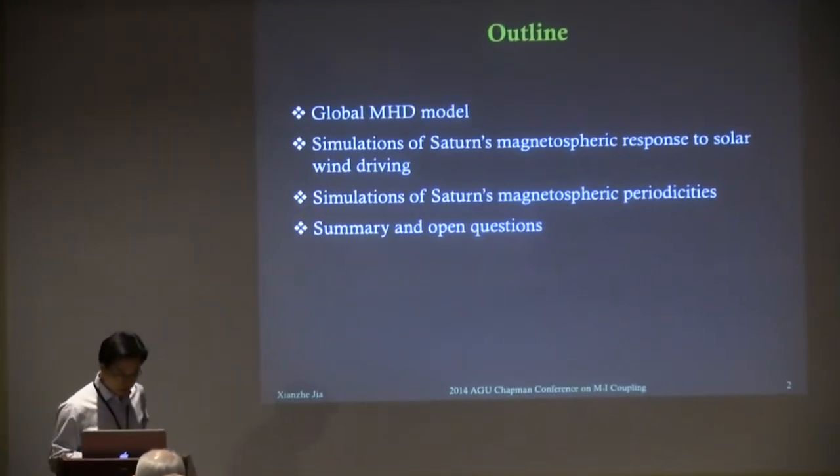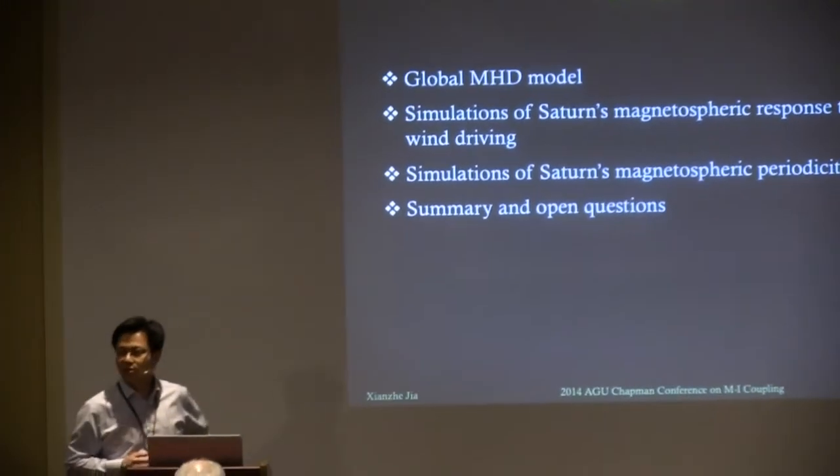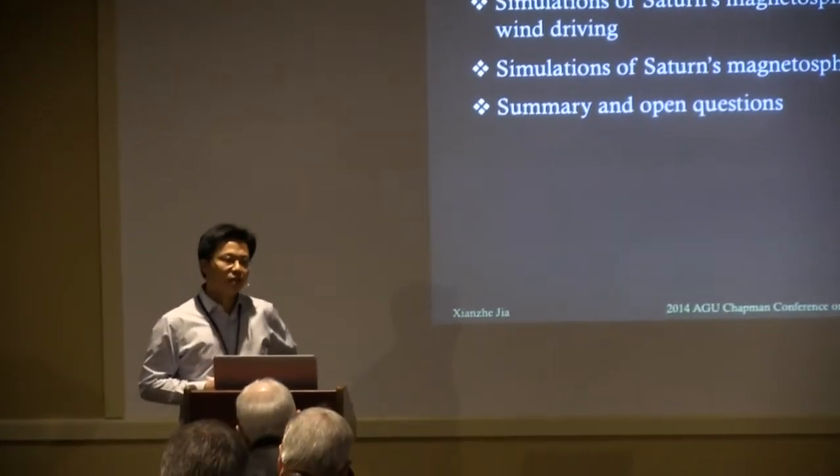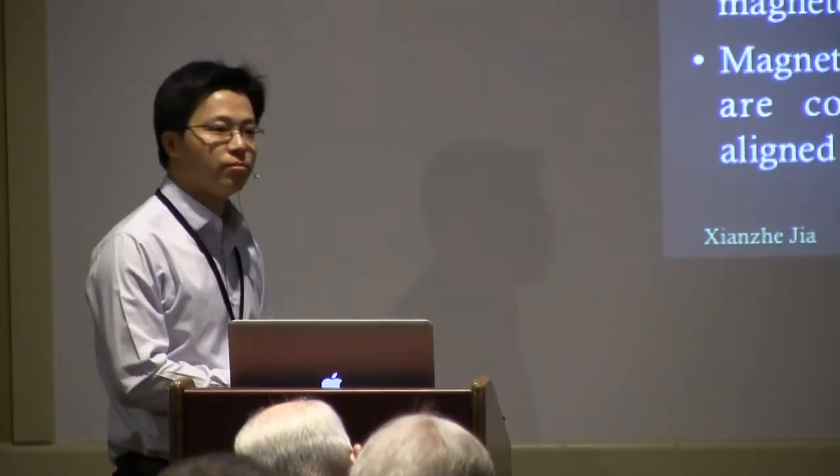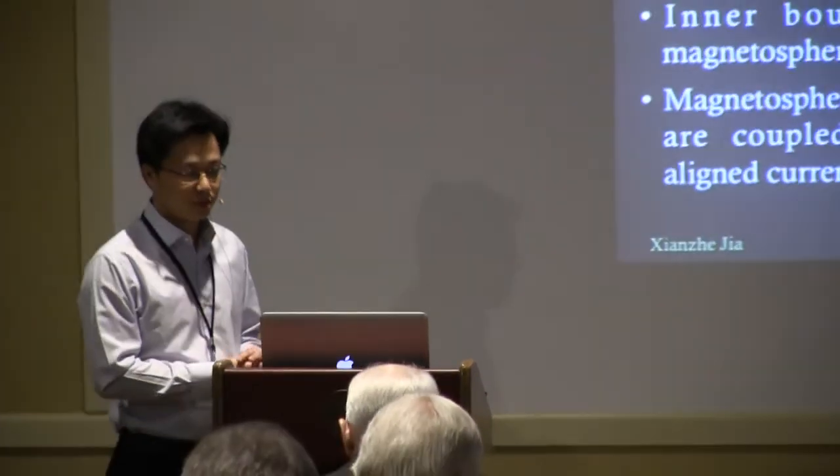I'd like to give you a brief introduction to the model, specifically the adaptation of a conventional MHD model to the outer planets, and I'll talk about two sets of simulations we've done. One looks at the interaction between solar wind disturbances and the Saturnian magnetosphere. The other focuses on the periodicities Margie talked about yesterday. We are using the Michigan model BATS-R-S, which most of you have probably heard of.